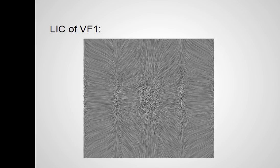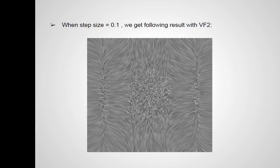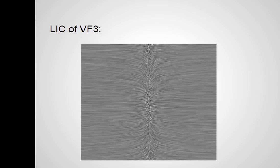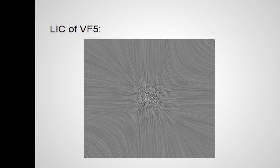I mentioned that I had five vector fields. This is the LIC of vector field 1, this was vector field 2, vector field 3, vector field 4, and finally vector field 5.